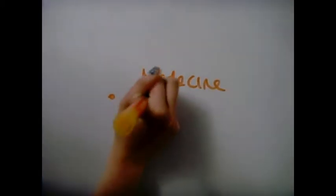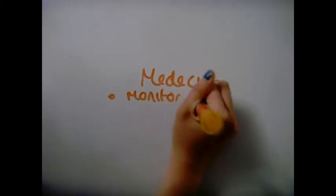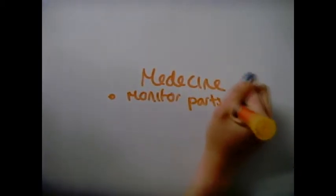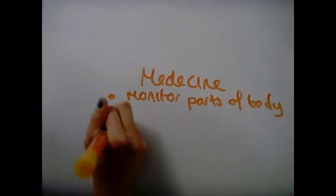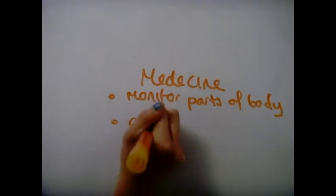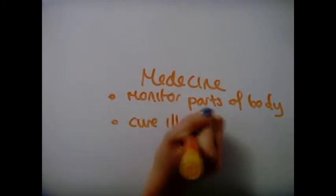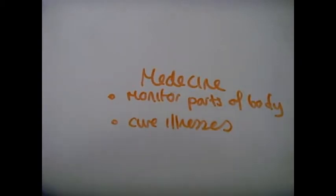In medicine, radioactivity is used to monitor parts of the body. Gamma emitters are swallowed or injected to follow the transport of the tracer. Also, they are used to treat illnesses. Some examples: iodine-131 is used to treat a condition of the thyroid, and gamma knives can kill cancerous cells.